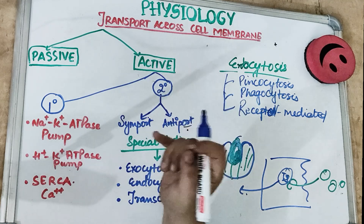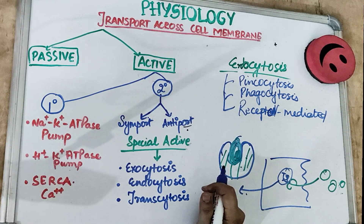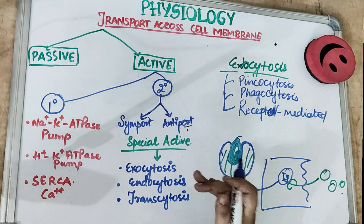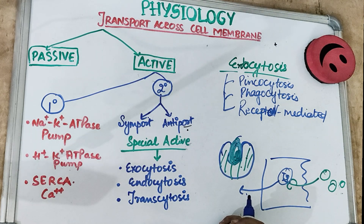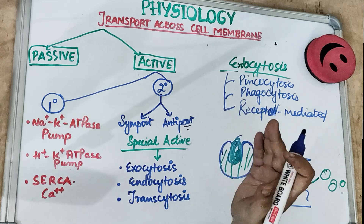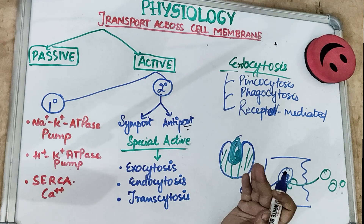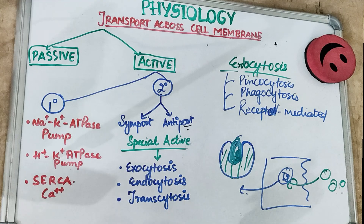This finishes our active transport. We have studied primary, secondary, symport, antiport, and the special types of active transport: exocytosis, endocytosis, and transcytosis. If you like our video, give it a thumbs up. I hope I helped you understand and learn transport across the cell membrane. If you have any questions, leave them in the comments below, and I will see you soon.